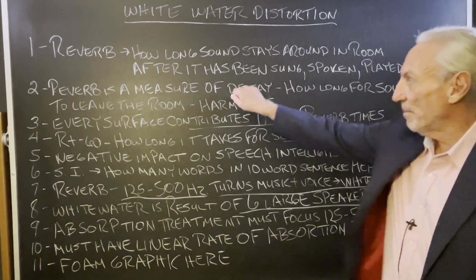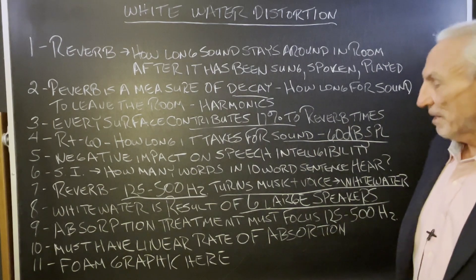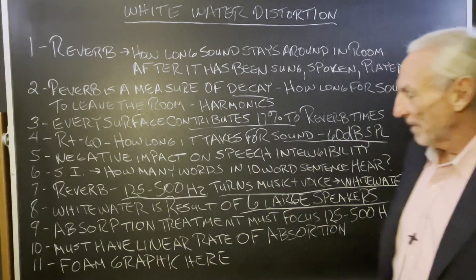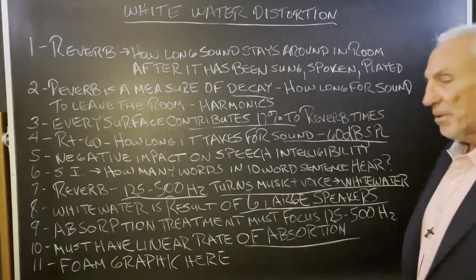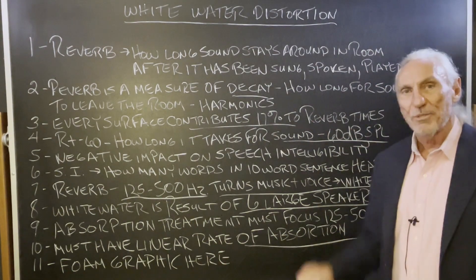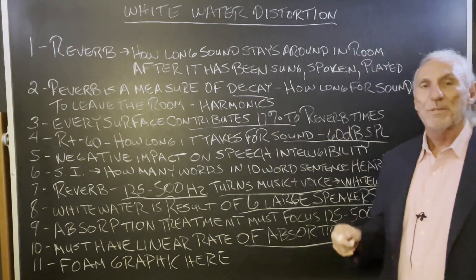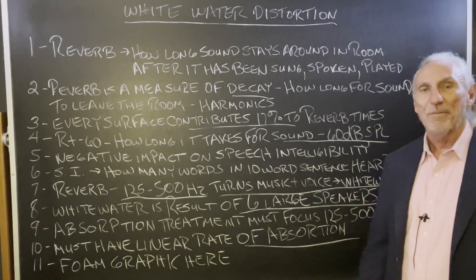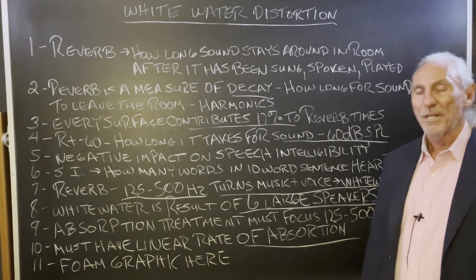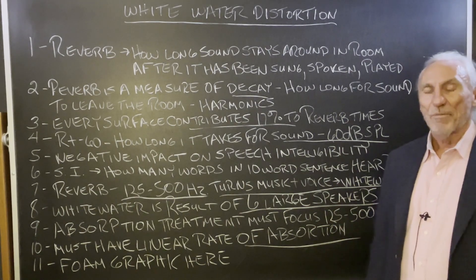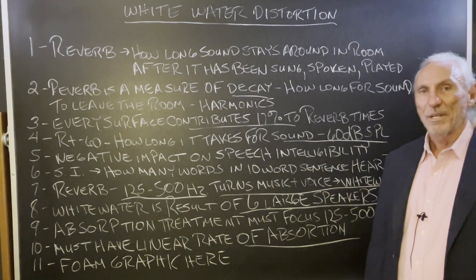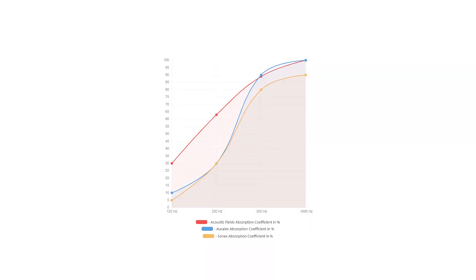We want to get it out, we want to get it out quickly. You must have a linear rate of absorption in order to do this, and you must focus on that 125 to 500 hertz region — that's the most critical region. Look at our foam technology. Look at the red line and the smooth response curve there. That's what you want for reverb management.